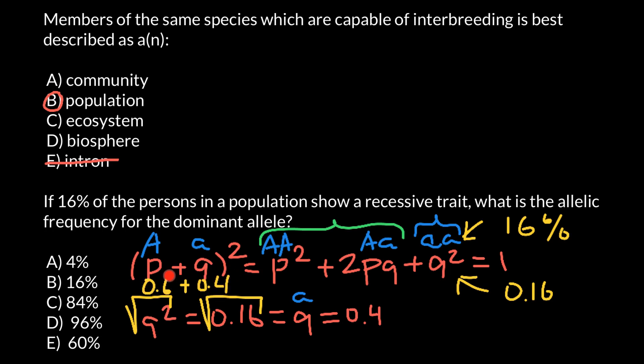Of course, the frequency of the other allele would be 0.6. If we need an answer in percentage form, we just multiply this number by 100, and we get 60%. This is answer E. This is the frequency of the dominant allele.